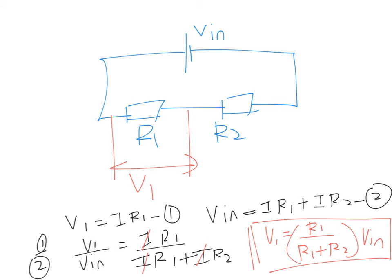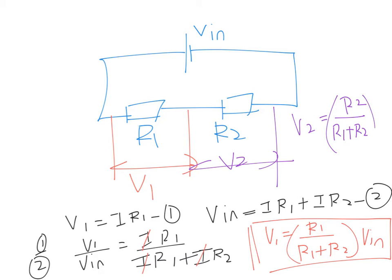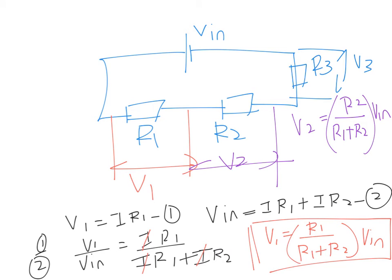We can also expand it. If I wanted to find the PD across V2, then V2 equals R2 over R1 plus R2 times V in. And it even works if you have more than two resistors in series. Let's say you have another resistor R3, and I want to find the PD across it, V3. Then V3 equals R3 over R1 plus R2 plus R3 times V in. So you can use this formula as long as they are in series.